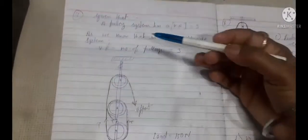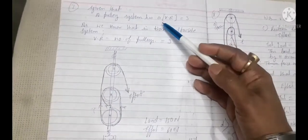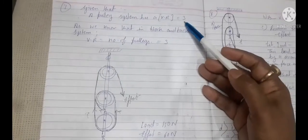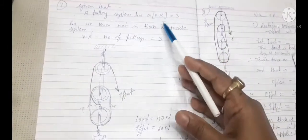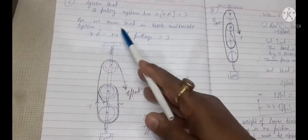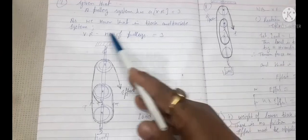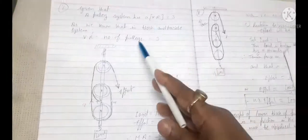See what I have done here. Given that a pulley system has three pulleys, and that equals to velocity ratio, that's why I have written a pulley system has a velocity ratio that equals to 3. As we know that in block and tackle system, velocity ratio equals to number of pulleys, that equals to 3.